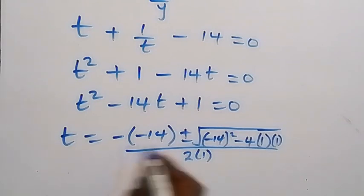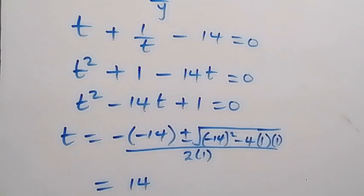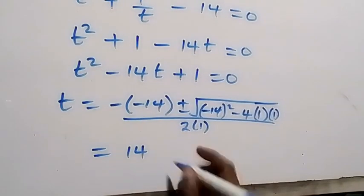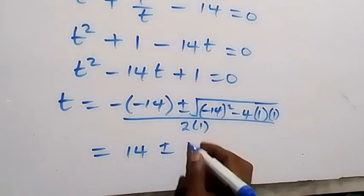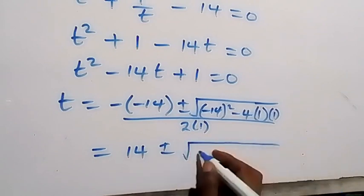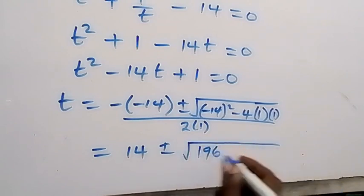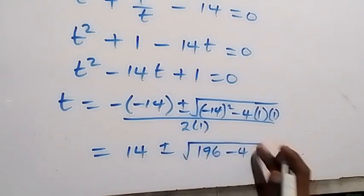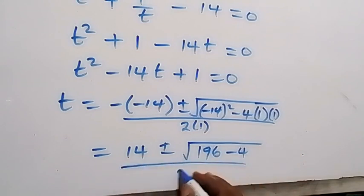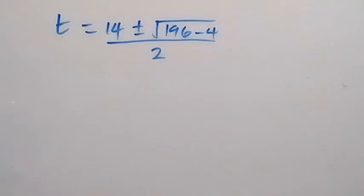And when we solve this, we have minus times minus as plus. This will give us t equals 14, then plus or minus square root of negative 14 squared, we have 196, then minus 4. All over 2 times 1 is 2.